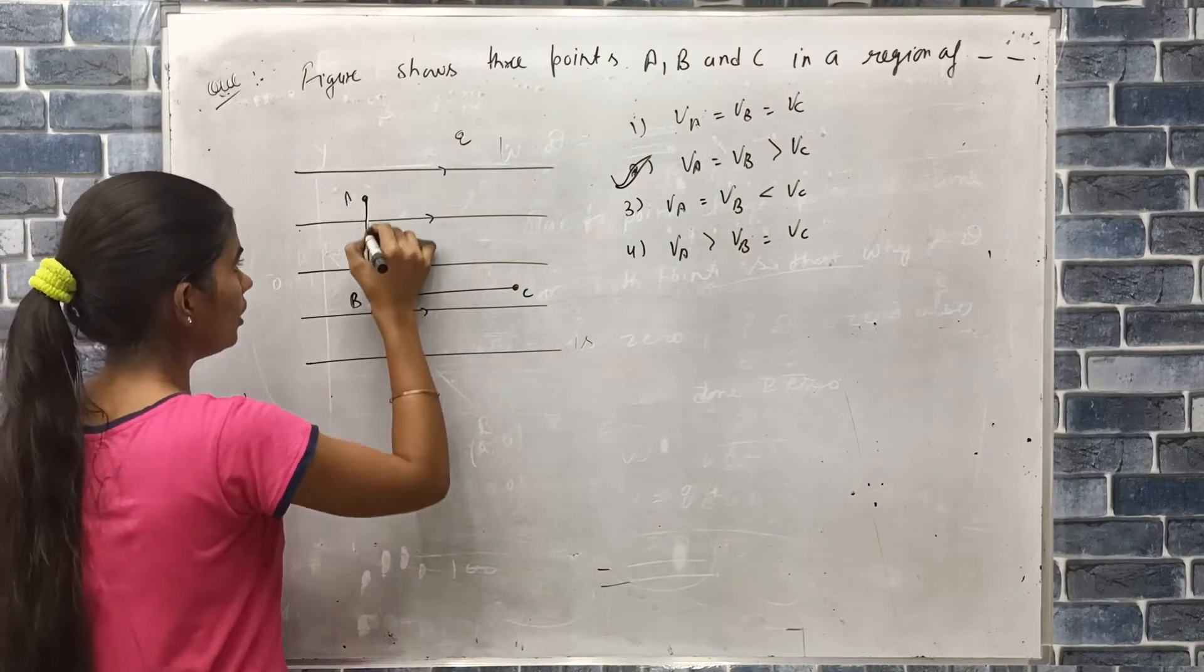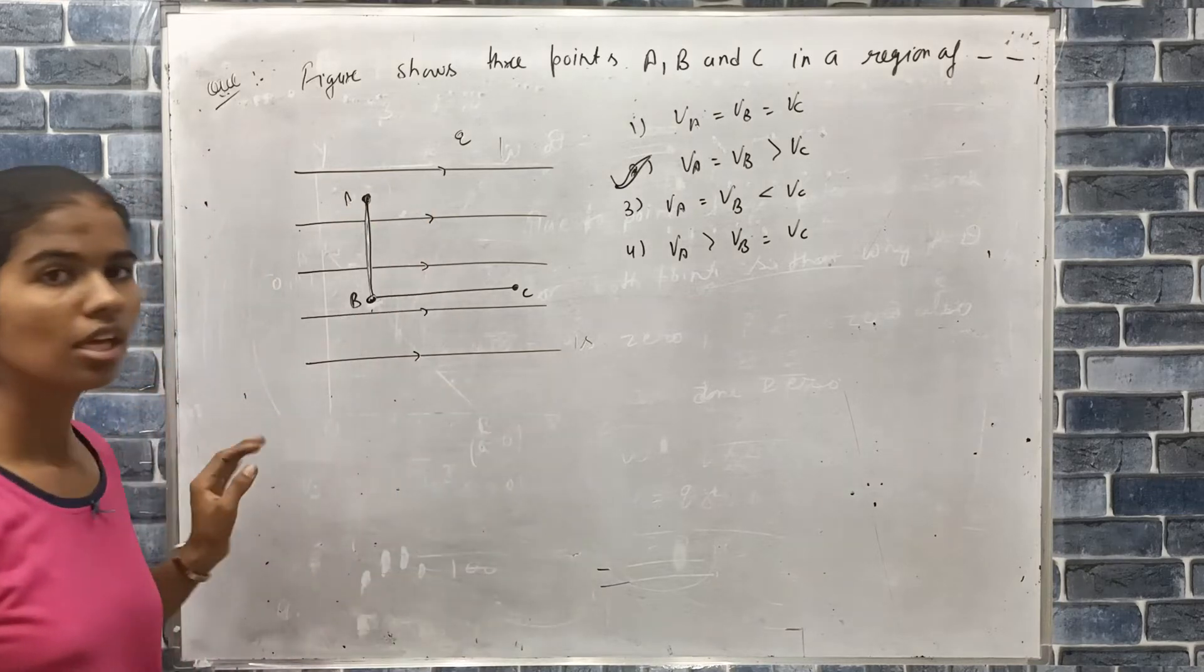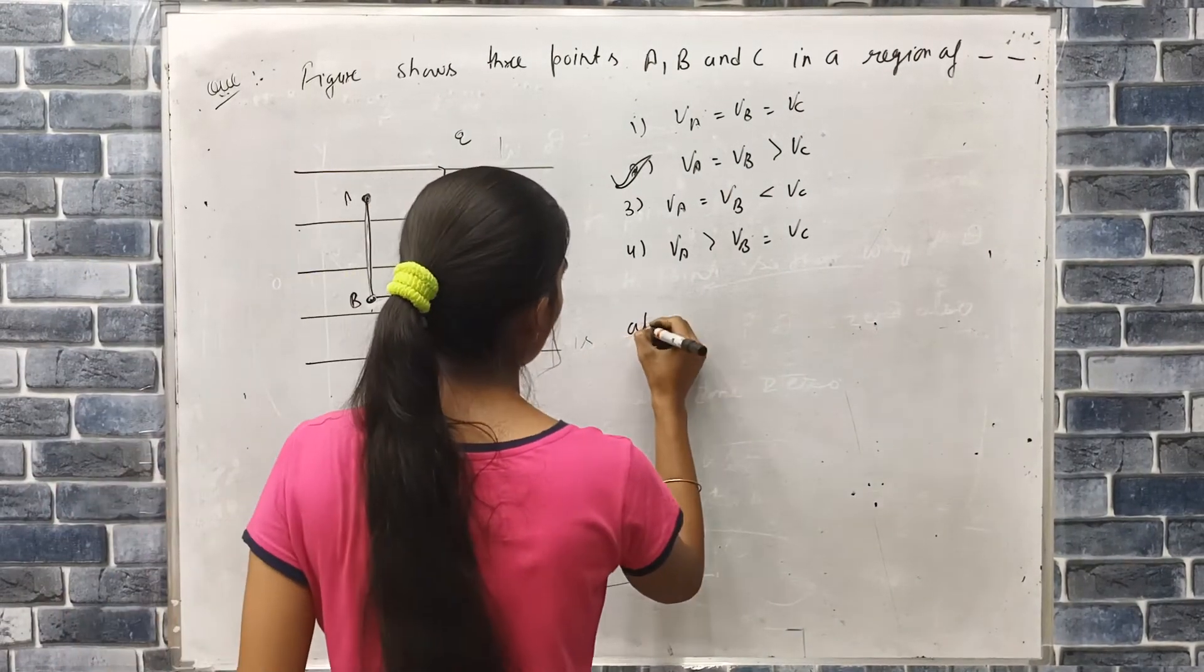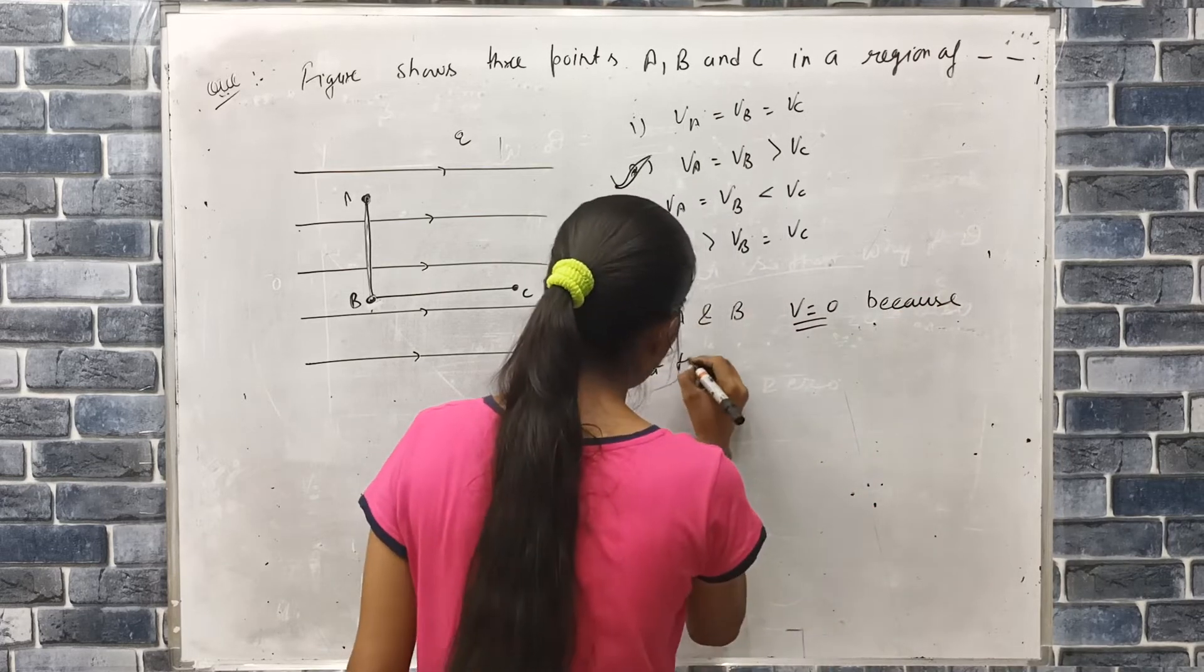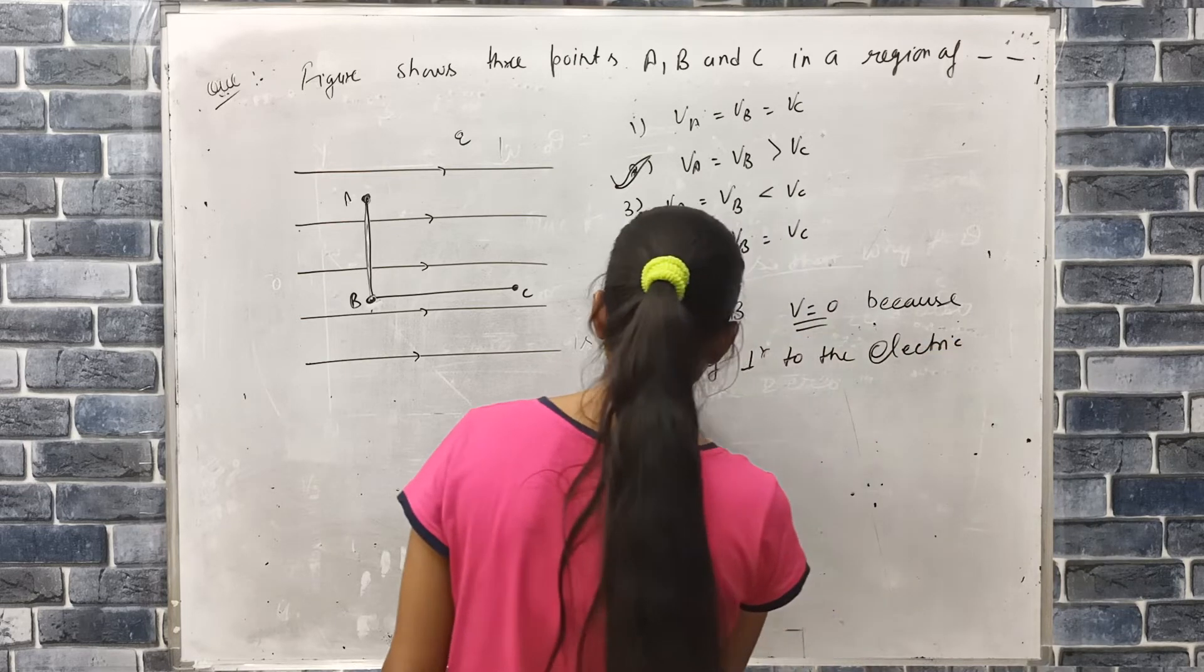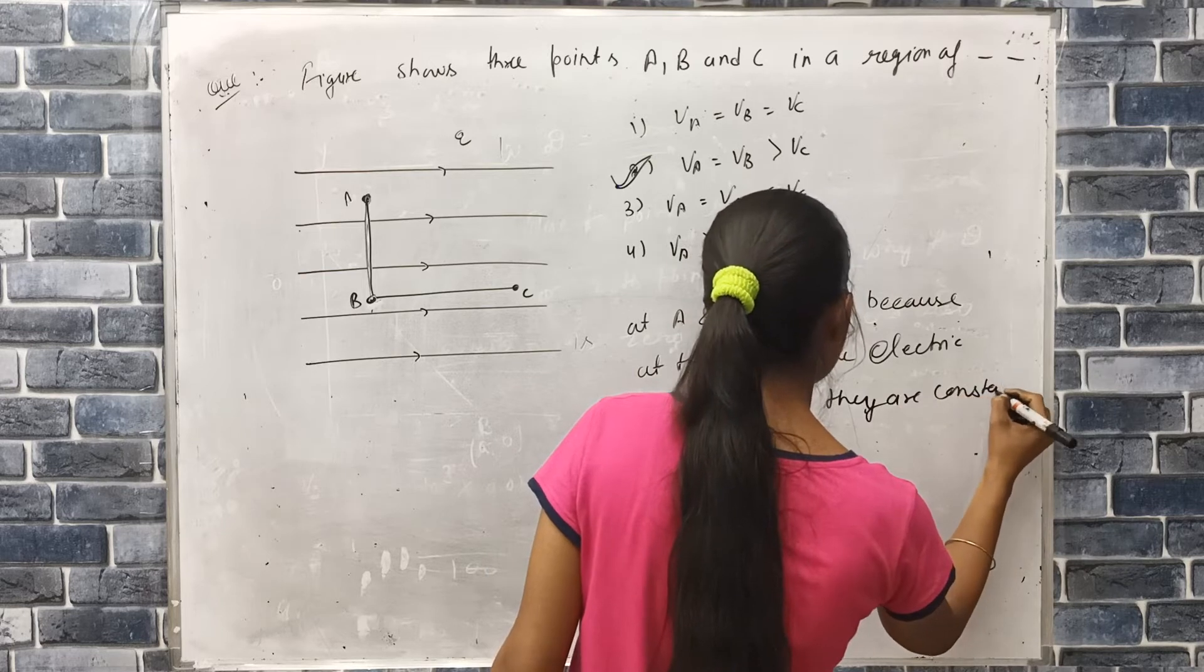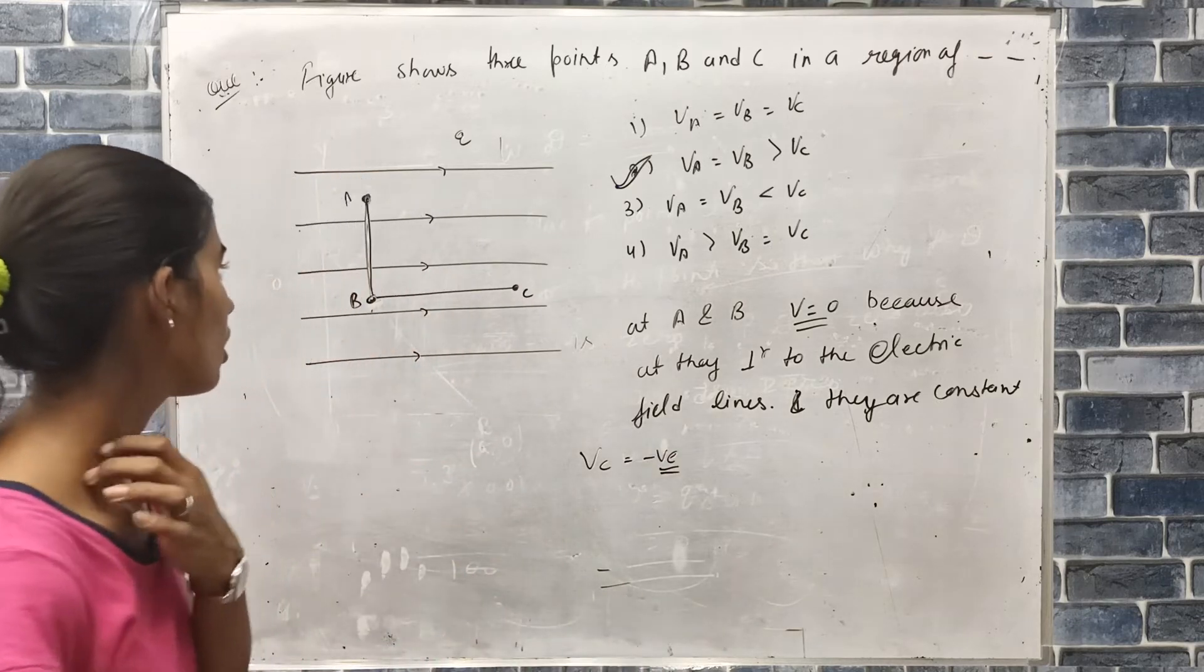Because the AB line is perpendicular, the potential is the same. If the AB line is perpendicular to electric field, then the potential difference is zero. So at point A and B, potential is the same because they are perpendicular to the electric field line.